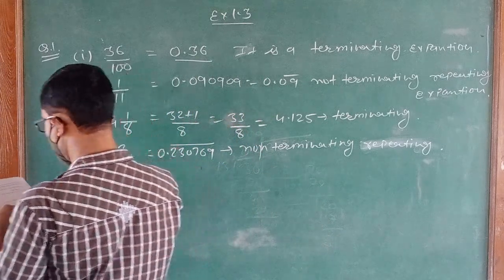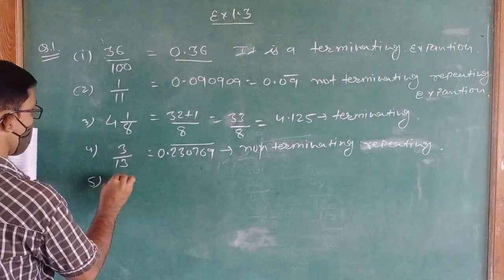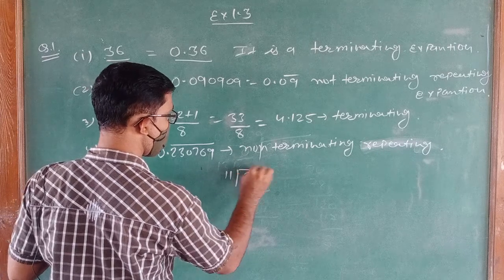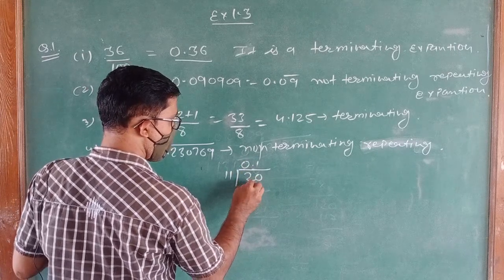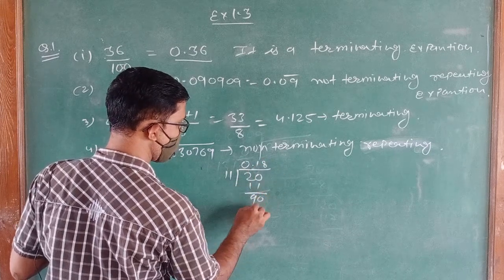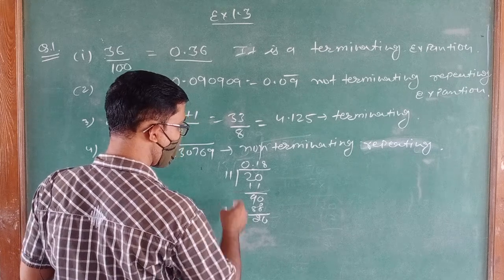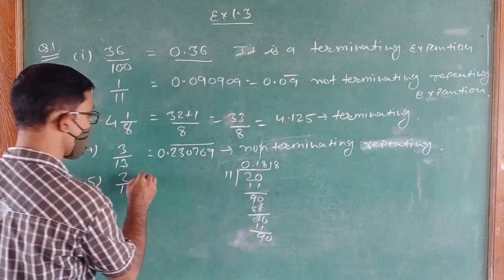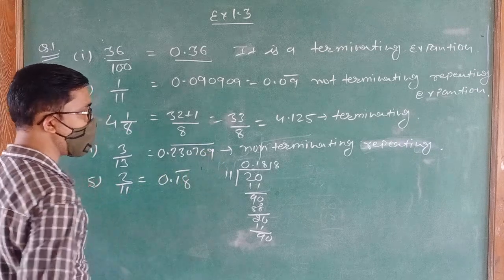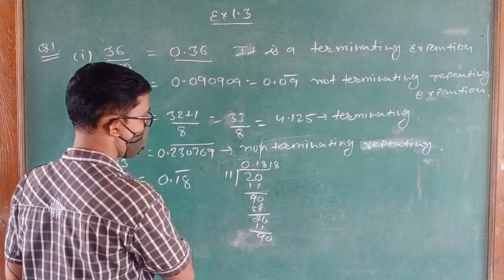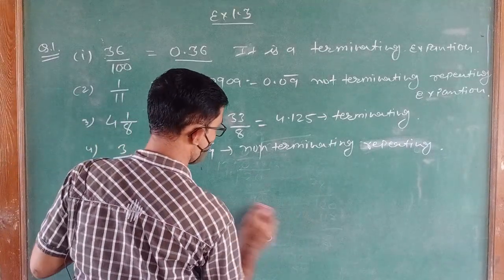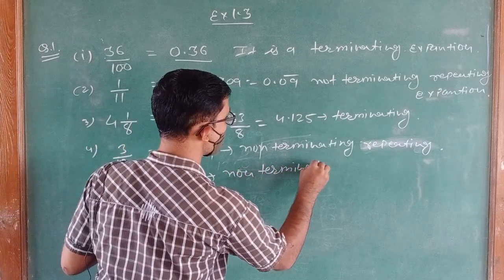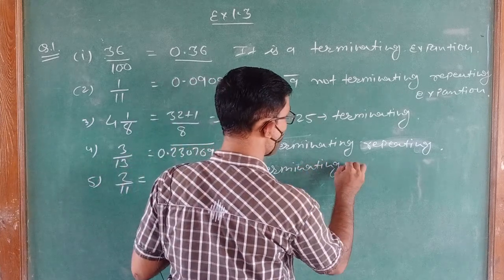Question No.5: 2 upon 11. Dividing 2 by 11: 11×0=0, 20÷11 gives 1 remainder 9, 90÷11 gives 8 remainder 2 — digits 18 repeat. So 0.1818... This is also Non-terminating Repeating Expansion.